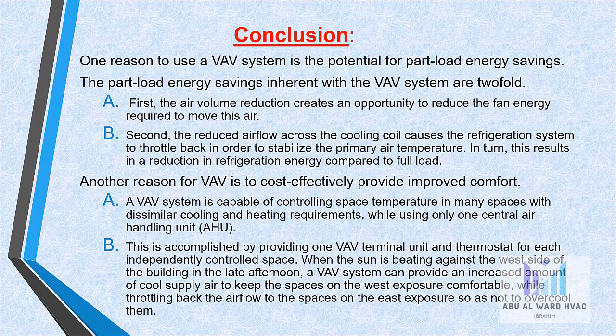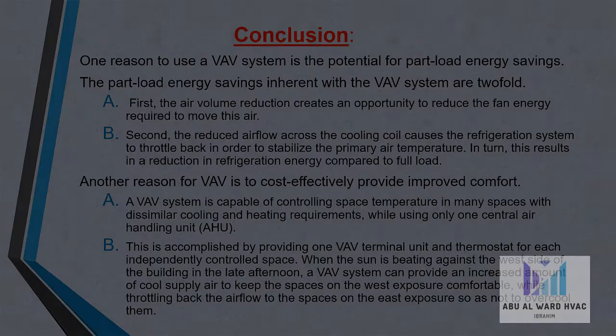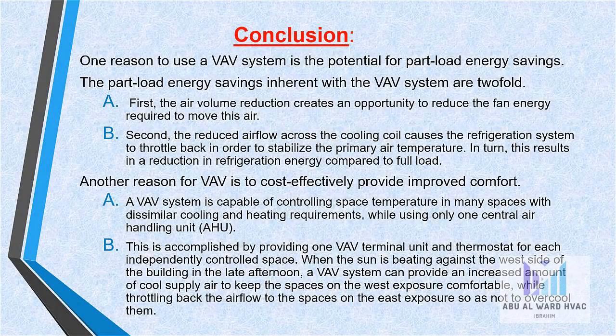This is accomplished by providing one VAV terminal unit and thermostat for each independently controlled space. For example, when the sun is beating against the west side of the building in the late afternoon, a VAV system can provide an increased amount of cool supply air to keep the spaces on the west exposure comfortable, while throttling back the air flow to the spaces on the east exposure so as not to over-cool them.